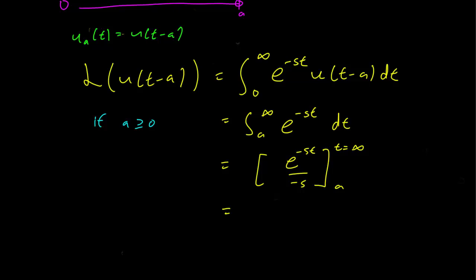And this is just equal to the limit as b goes to infinity of e^(-sb) over -s minus e^(-sa) over -s.